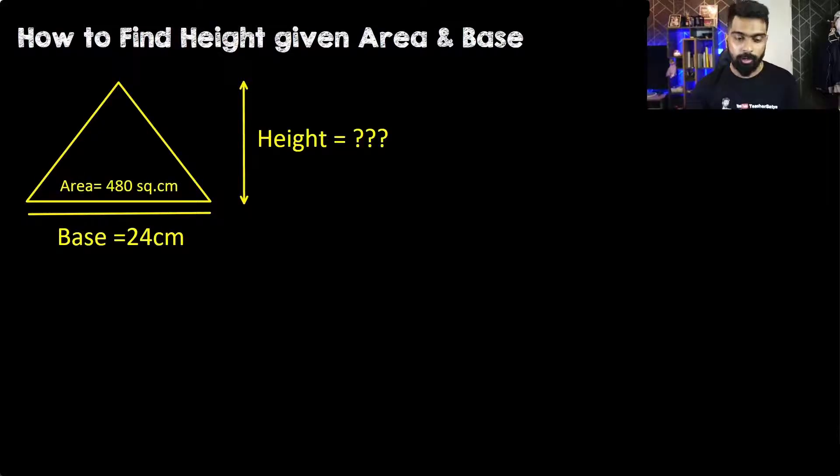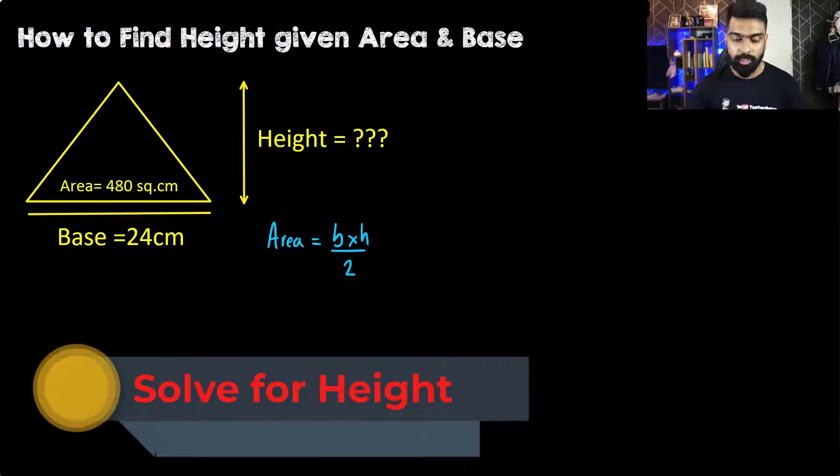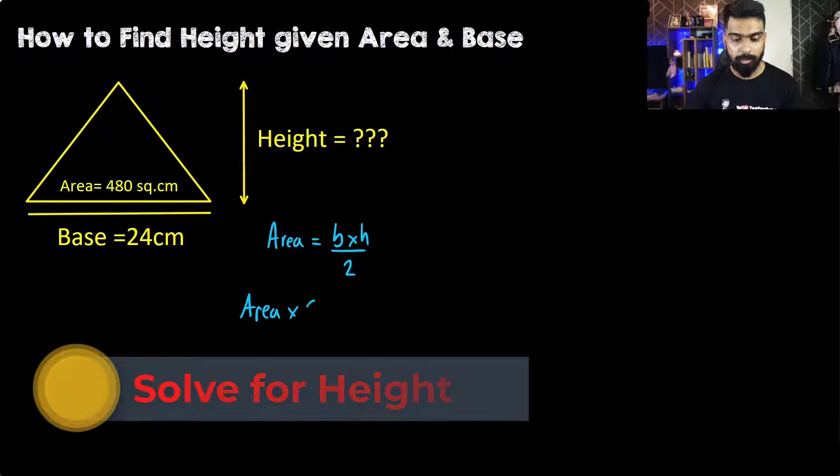First, let's write down the formula to find the height. As we all know, the area of a triangle is base times height divided by two. Now let's solve this equation for height. We're going to transpose this two to the other side, so we have area multiplied with two equals base times height.